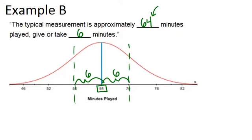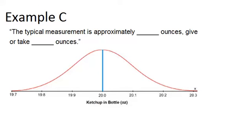Finally, we'll look at example C. The typical measurement is approximately blank ounces, give or take blank ounces. And this is a measurement of ketchup or data about ketchup in a bottle in ounces. We can see that the mean is right here at 20 ounces, 20.0 ounces. So that's the typical measurement.